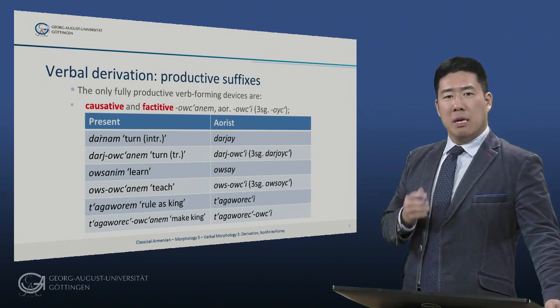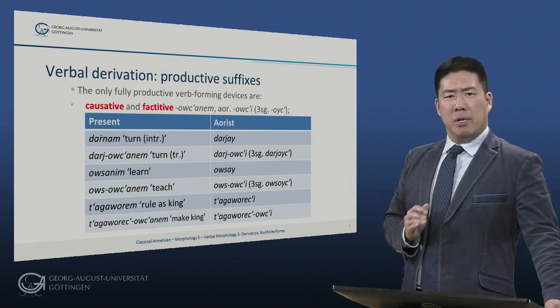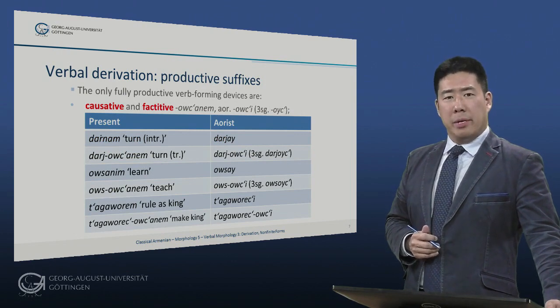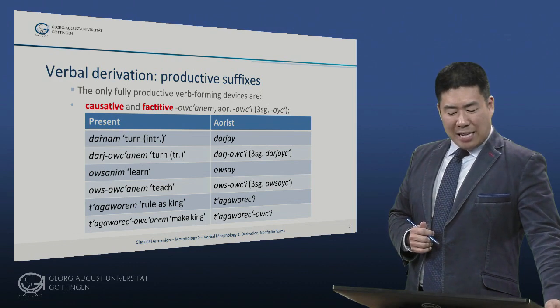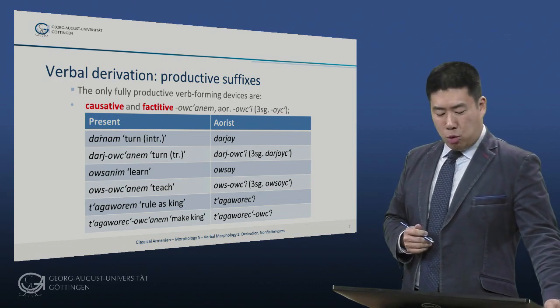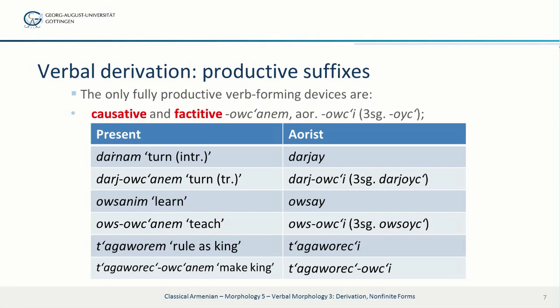Let's now turn to those suffixes that remain completely productive into the classical Armenian period. In first place, we must mention the causative and factative suffix -utanem, with aorist -utzi. So we have a suffix -utzi. Note the third singular -oits, with vowel weakening in all other forms from oi to u. In the present, we have the familiar present-forming suffix -an. That's the morphology of this particular formation. Let's look at some examples.